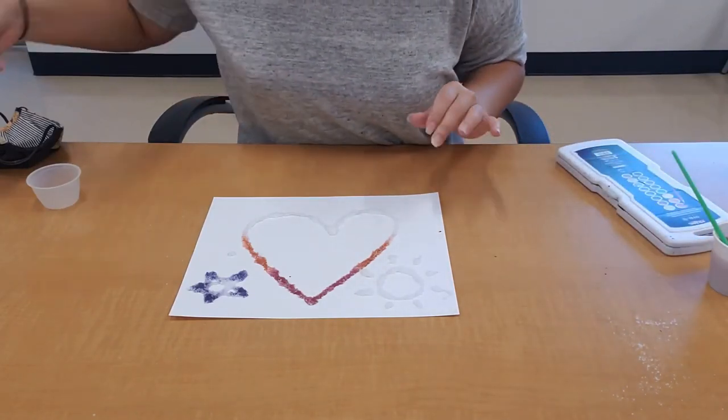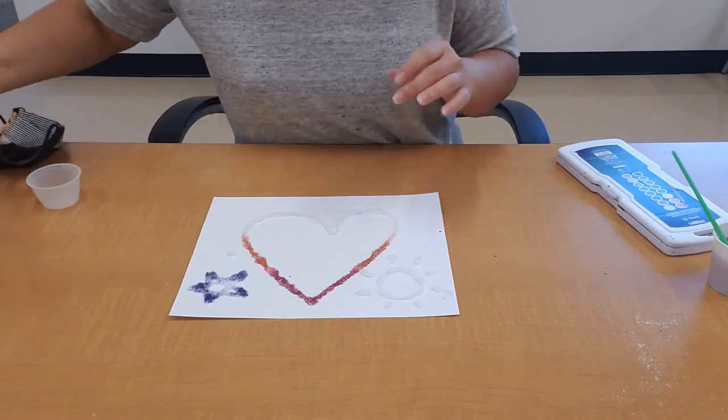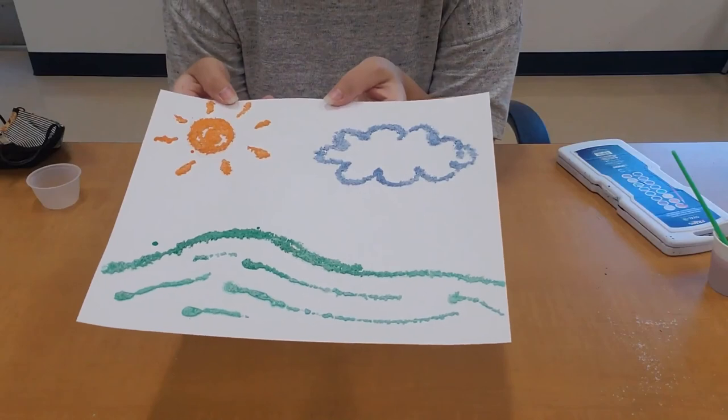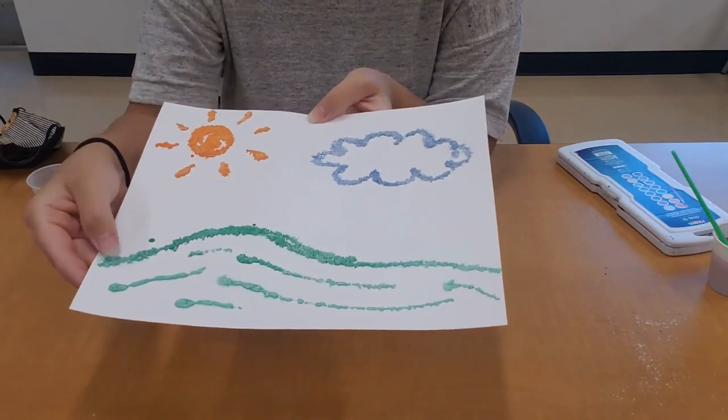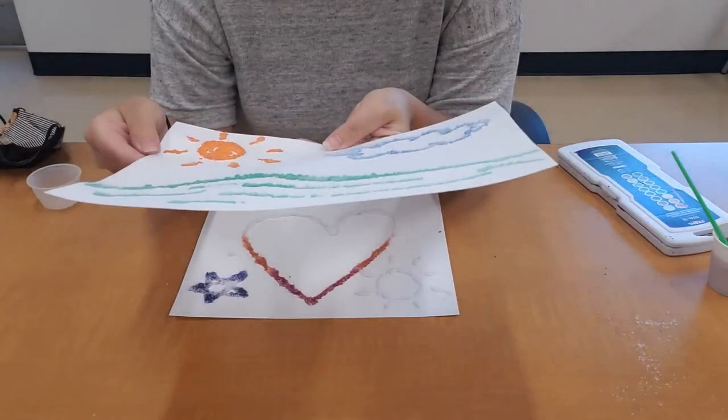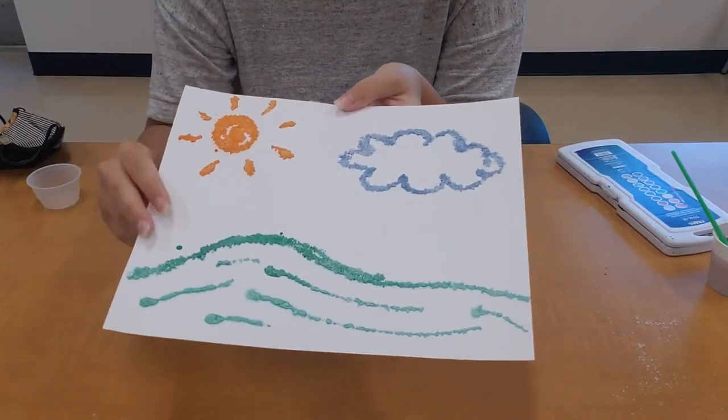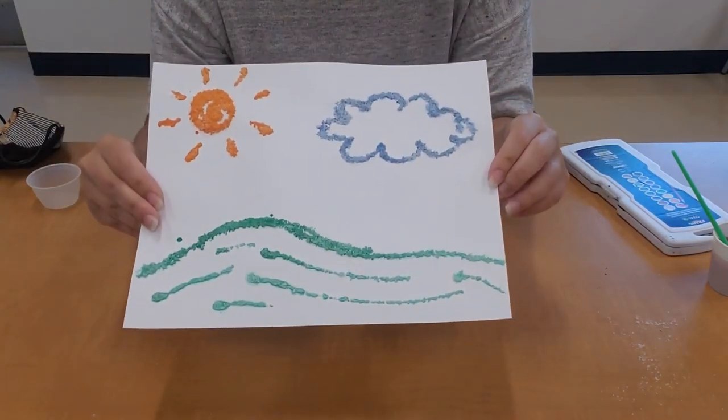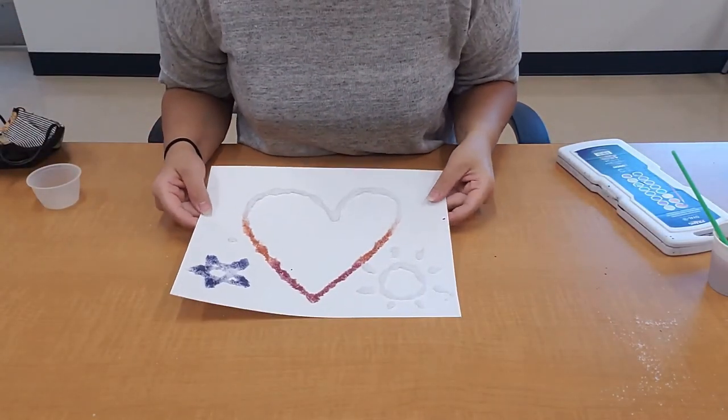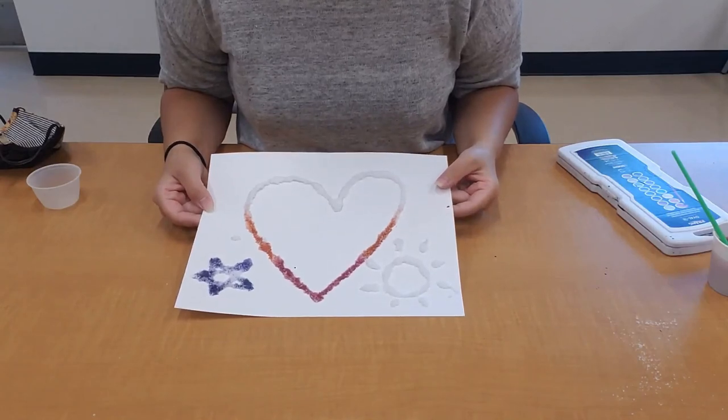And then when your picture dries, you'll get something that looks like this. The salt is all painted and colorful, and then it's a little bit raised because you've got the glue and the salt. Well, thanks for watching. We can't wait to see your finished raised salt painting.